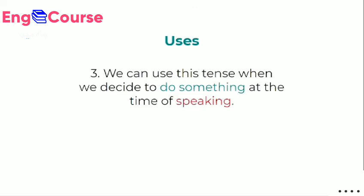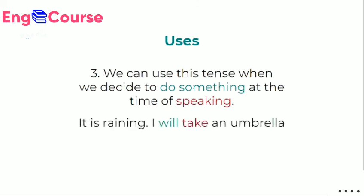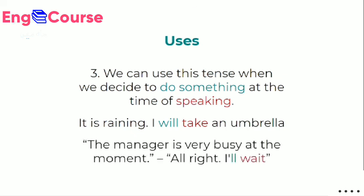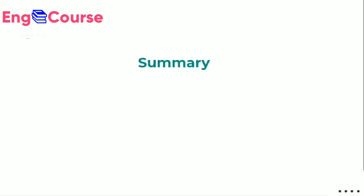Another use of future indefinite: we use this tense when we decide to do something at the time of speaking — a sudden decision. Example: 'It is raining, so I will take an umbrella.' You were about to go out, but suddenly you decide to take an umbrella, so you use future indefinite. Another example in context: you go to meet a manager and someone tells you 'The manager is very busy at the moment.' You suddenly decide to wait and say, 'Alright, I'll wait.' In all such spontaneous decision situations, use future indefinite tense.